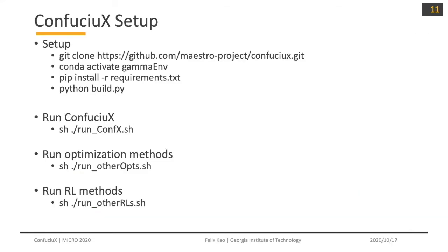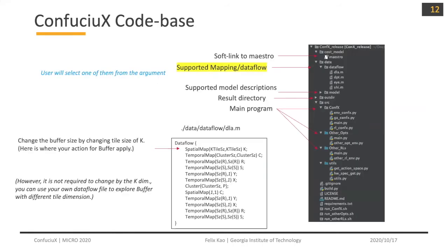Now let's see how to run Confucius. First, set up by cloning the repository and creating a virtual environment if desired, then install the required dependencies. You can run Confucius, other optimization methods, and other RL methods with three scripts. In the Confucius codebase, you will see a directory structure with a soft link to Maestro, supported dataflow strategies, supported models, an output directory for results, and a source directory containing three methods: Confucius, other optimization, and other reinforcement learning.